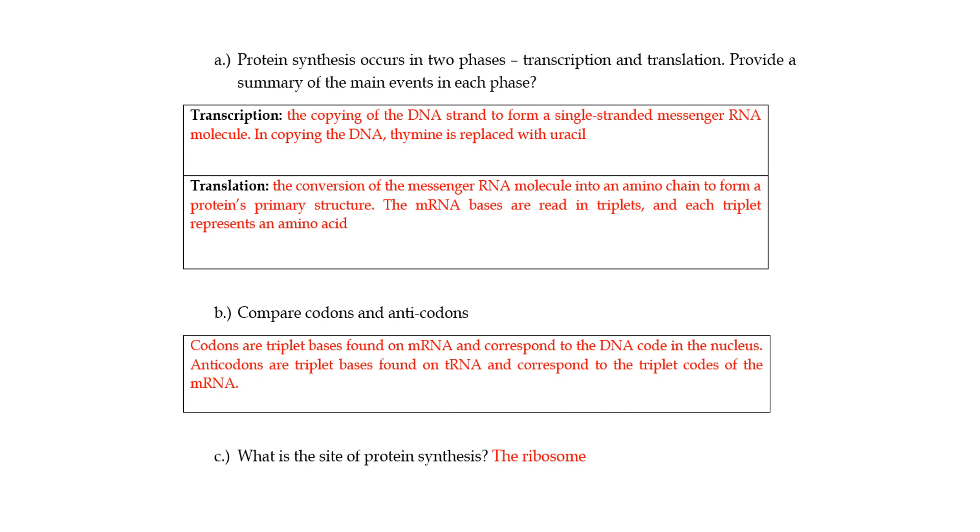Compare codons and anticodons. Codons are triplet bases that you find on mRNA and they correspond to the DNA codon in the nucleus. Anticodons are triplet codons that you find on tRNA and they correspond to the triplet codes of the mRNA. Where is the site of protein synthesis? You all know that's the ribosome.